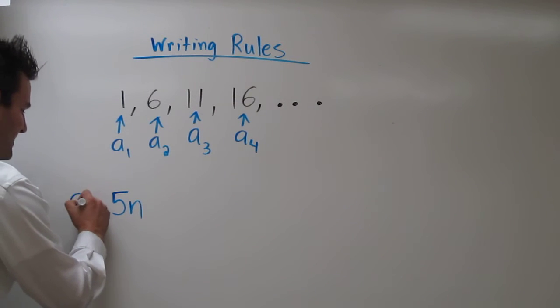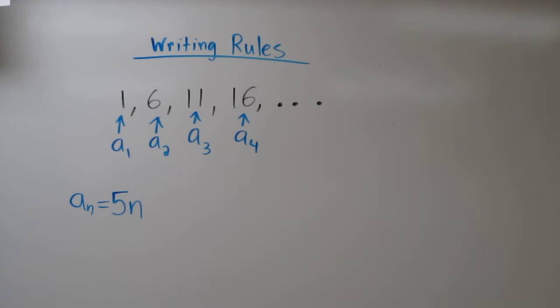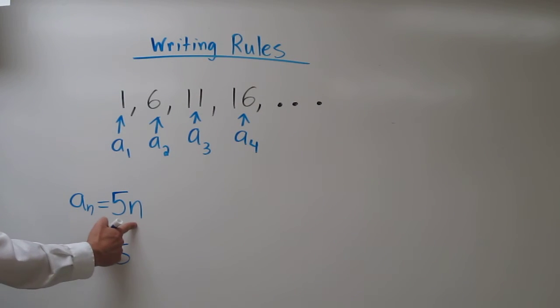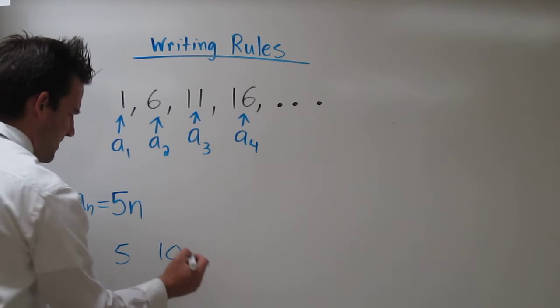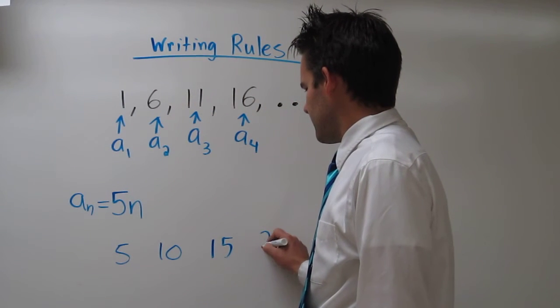If we're saying that this sequence's rule is a sub n equals 5n, well, then the first term would be 5, and the second term would be, let's plug in a 2 there, 10. Then we get 15 and 20.